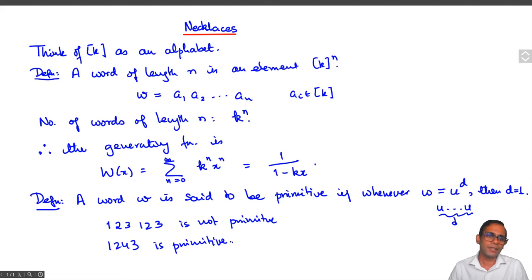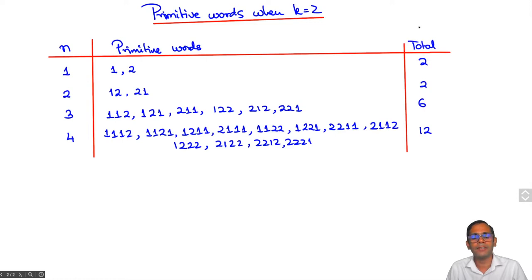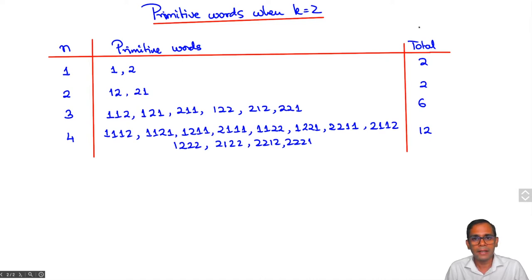As a first goal, let's count the number of primitive words. In this table, I've taken a two-letter alphabet and for small values of n written down all the primitive words of length n. There are only two words of length 1, and both of them are primitive. Of length 2, there are four words but only two are primitive: 1,2 and 2,1. The words 1,1 and 2,2 are not primitive. For n equals 3, there are eight words of which six are primitive.